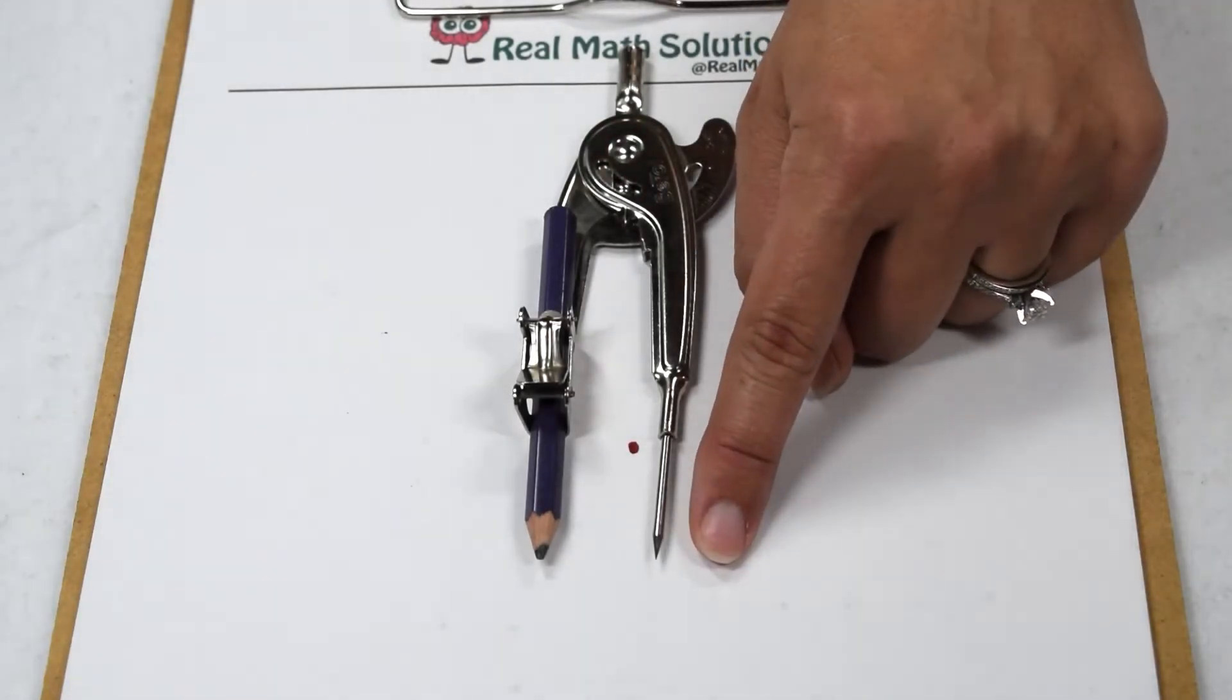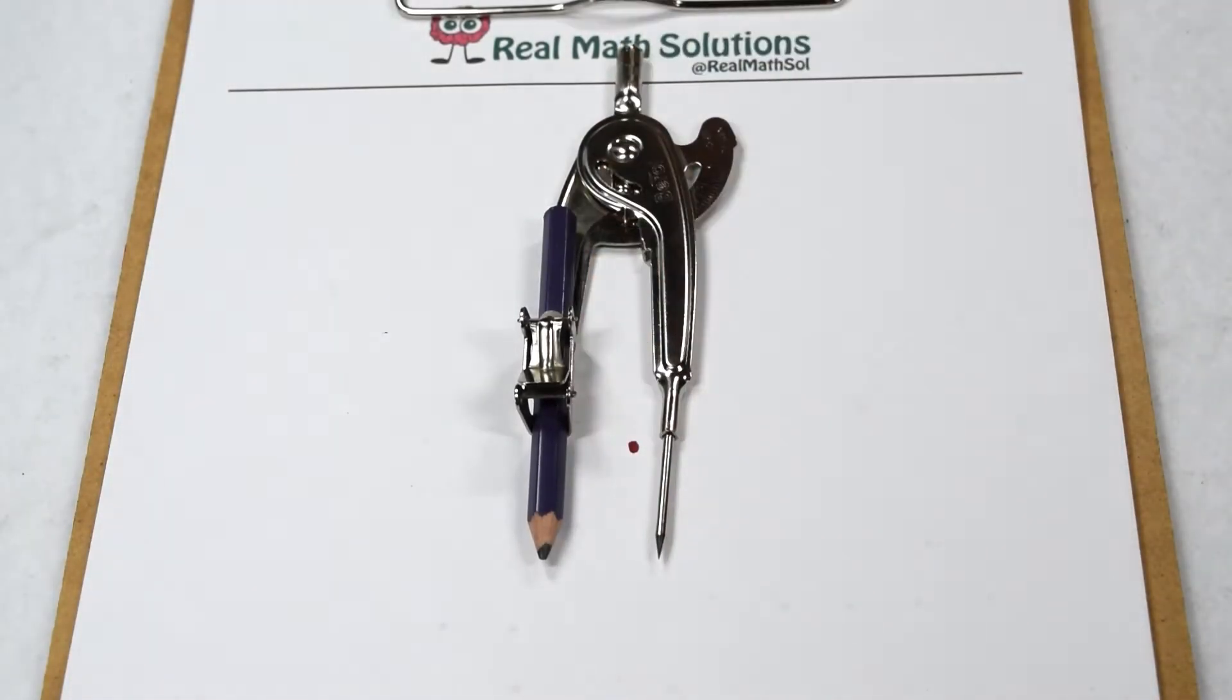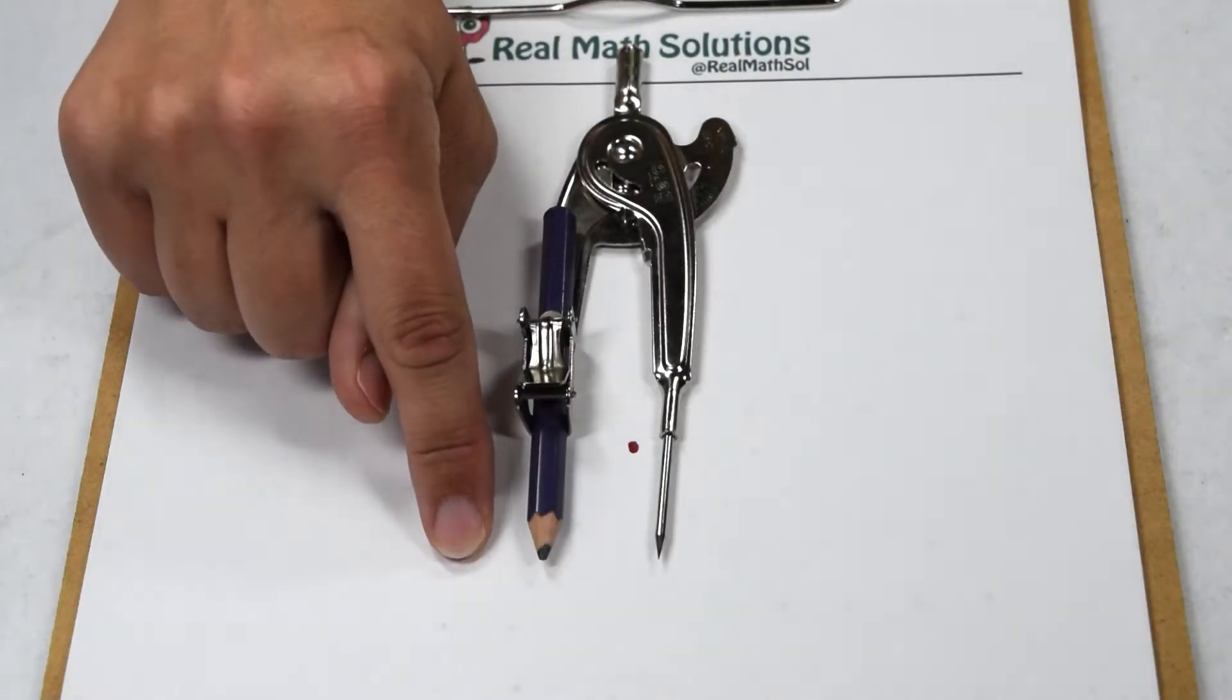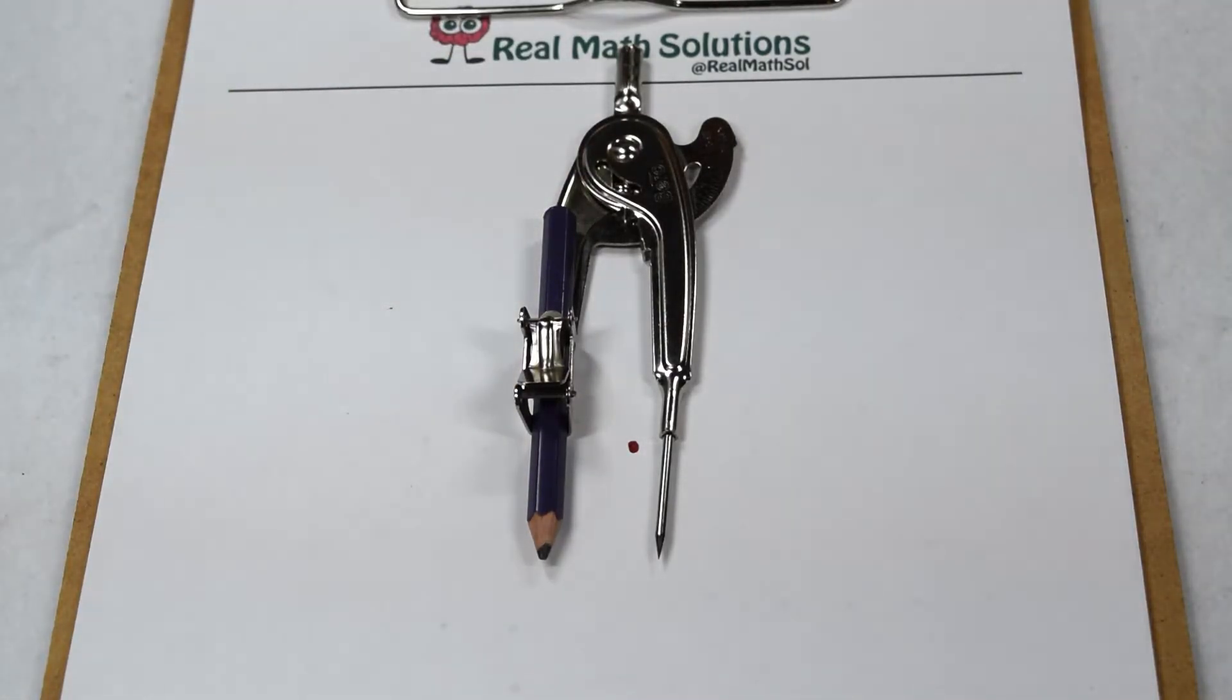A compass has two legs. One leg ends in a point and we're going to use that to anchor the center point of our circle. The other leg ends in a pencil and we're going to use that side to actually draw around our circle.